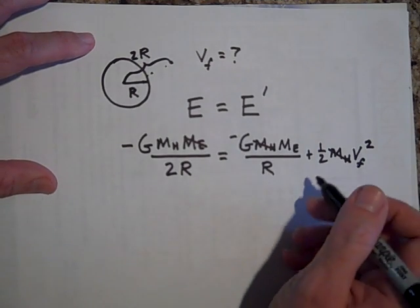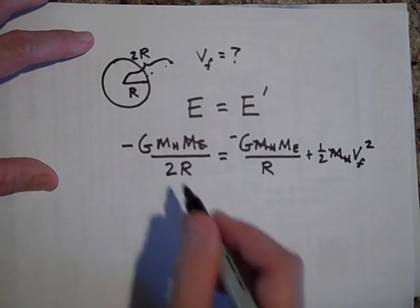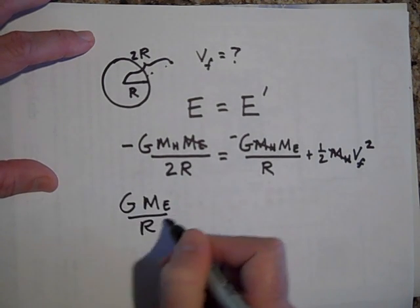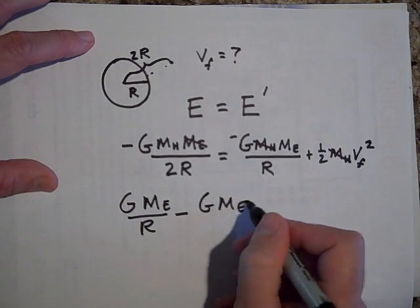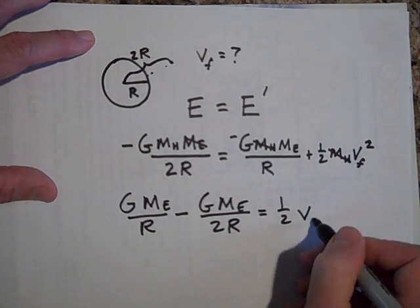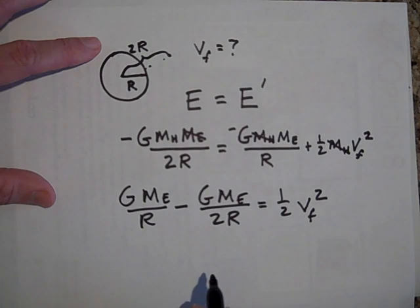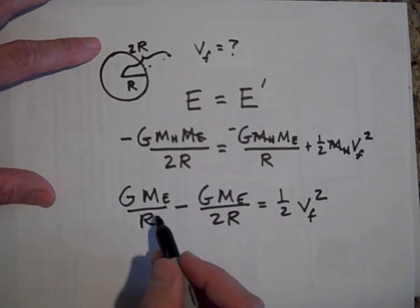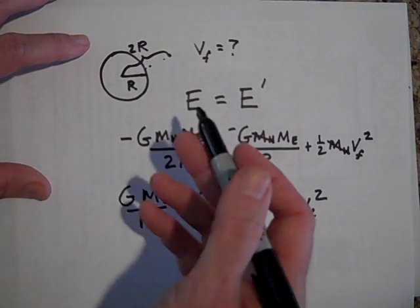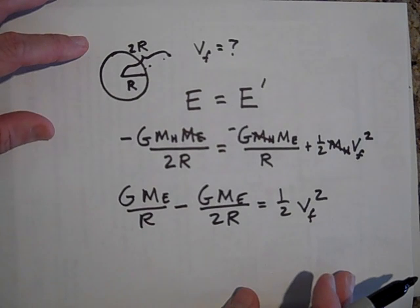Bringing the potential energy term at the surface to the other side: G times M_Earth over R minus G times M_Earth over 2R equals one half v_final squared. Multiplying both sides by 2 and combining terms with a common factor, you can solve for v_final. This is how you solve a problem where an object falls from far away and gravitational acceleration is not constant at 9.8 meters per second squared the whole time.